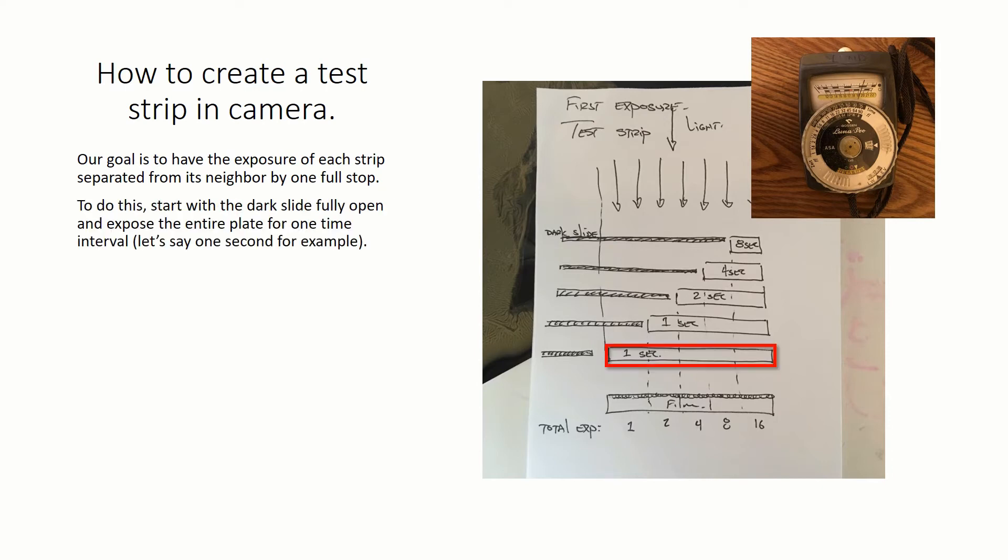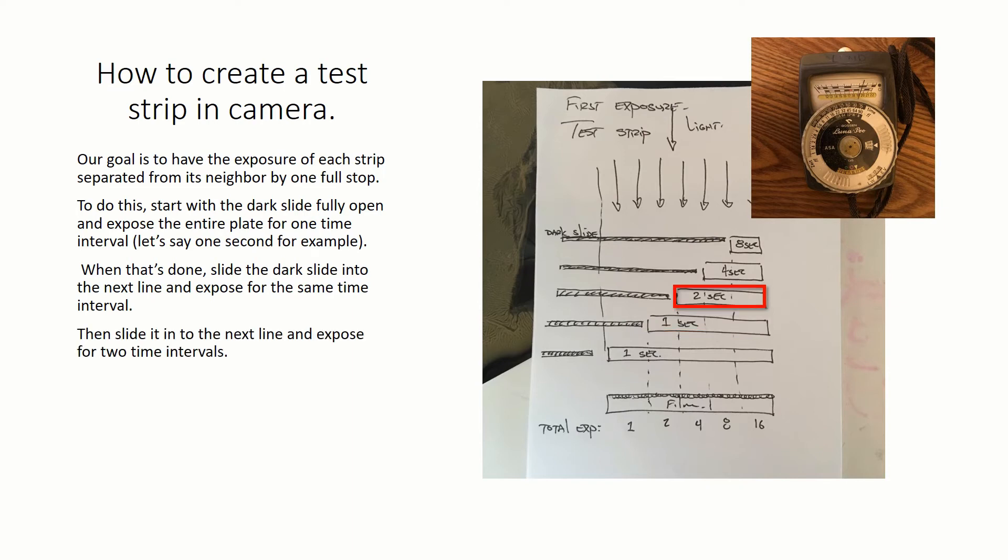Our goal is to have the exposure of each strip separated from its neighbor by one full stop. To do this, start with the dark slide fully open and expose the entire plate for one time interval. Let's say one second, for example. When that's done, slide the dark slide to the next line and expose for the same time interval, one second. Then, slide it into the next line and expose for two time intervals. Slide it in again and expose for four time intervals, and then finally eight time intervals. Close the dark slide completely and process the plate.